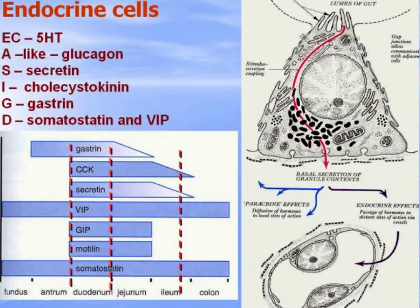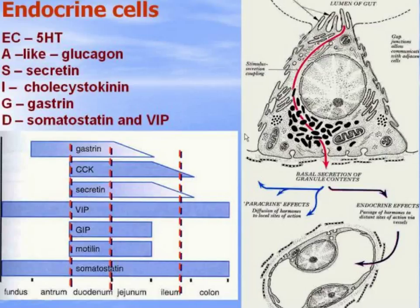The third cell type is endocrine cells. There are several types which produce several hormones; they are located mostly in the duodenum. The hormones accumulate in basal secretory granules and are released through the basal membrane into the intercellular fluid — this is a paracrine effect, affecting neighboring cells and regulating their activity. All these hormones can also enter the blood and, distributed by blood flow, act through receptors on distant target organs and cells.